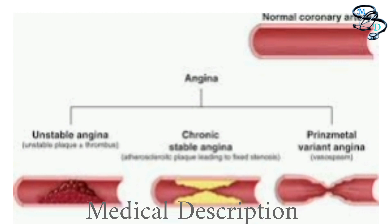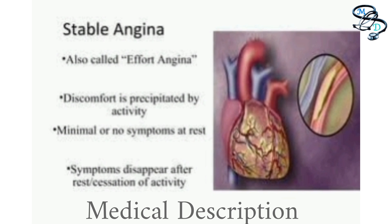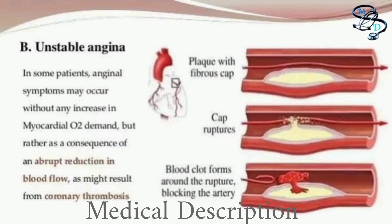Angina is pain, discomfort, or pressure in the chest. Chronic stable angina occurs when the heart is working hard enough to need more oxygen, such as during exercise, and the pain goes away with rest. The pattern remains stable for at least two months. Unstable angina is either new chest pain or a change in your usual pattern — worsening, lasting longer, or not relieved by rest or medication.